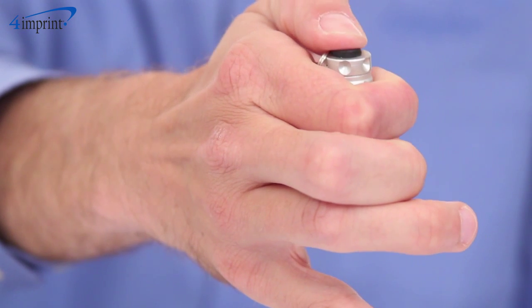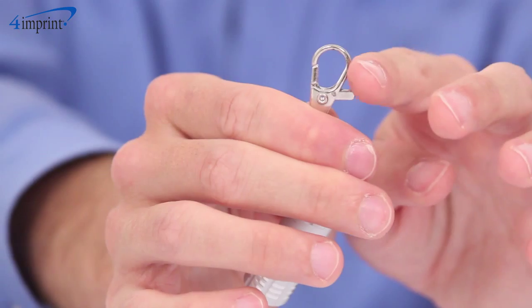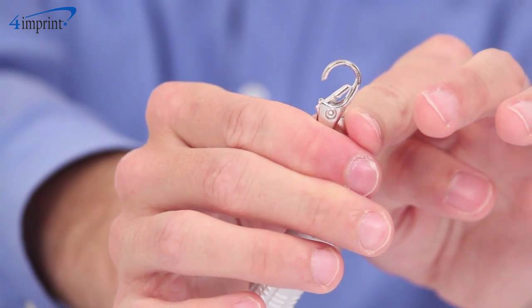Simply press the black button on the end of the flashlight to turn the light on or off and use the pocket clip to attach it to your belt loop or even a keyring.